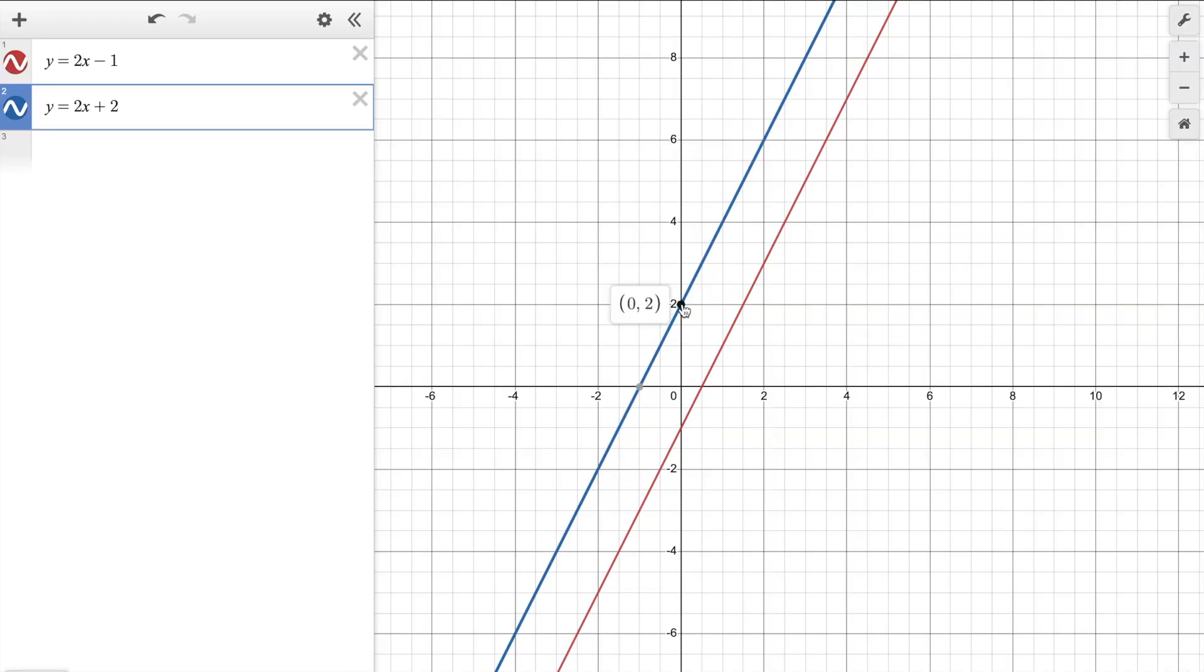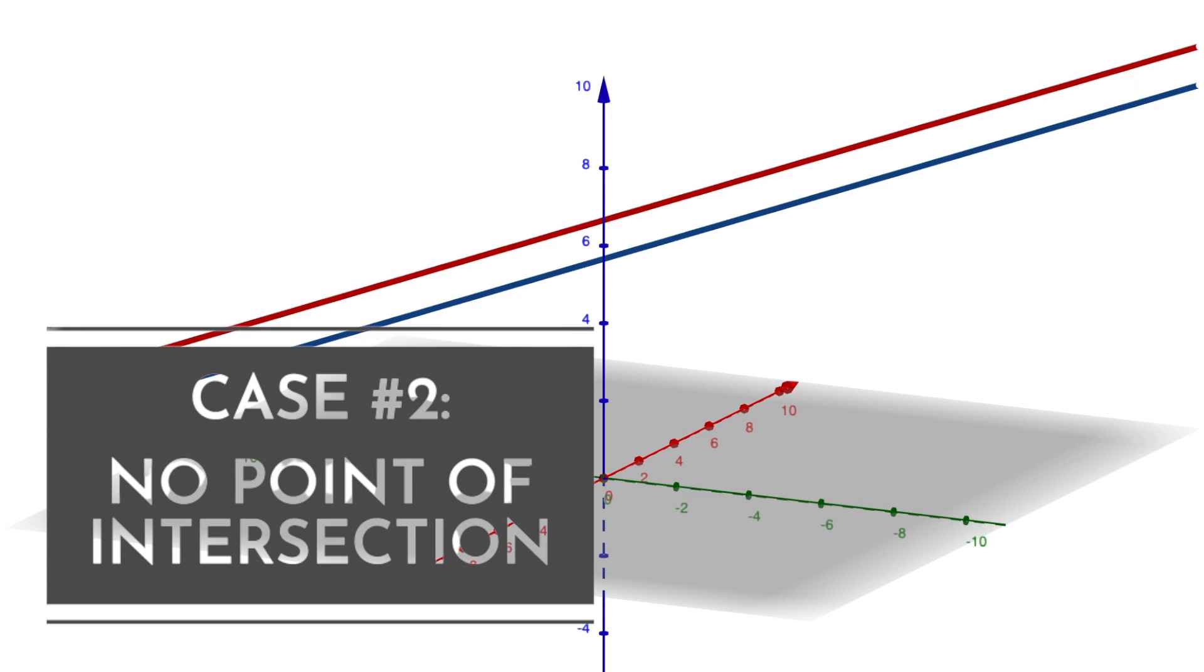Again, just like in two dimensions where these two lines will never intersect. They have the same slope, but they have a different y-intercept. So no points of intersection, which is also possible in three dimensions.